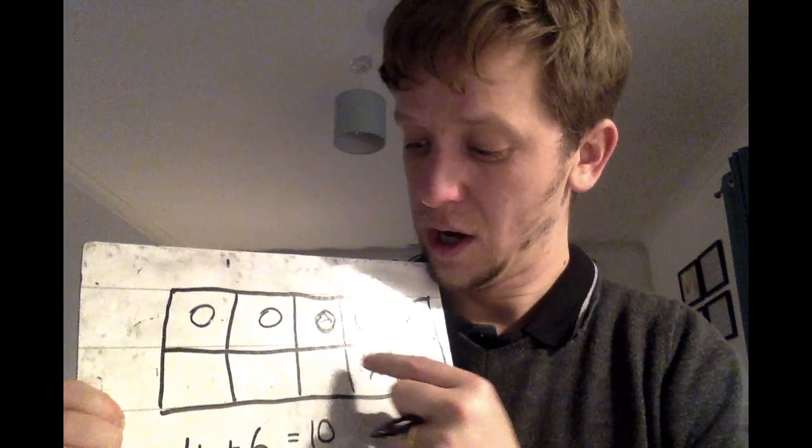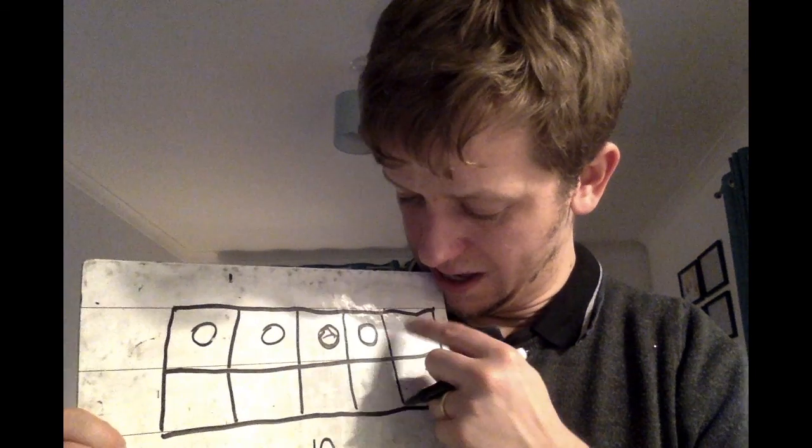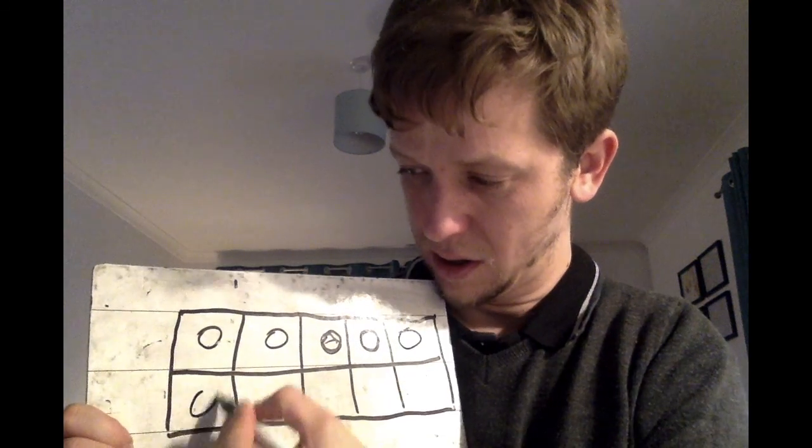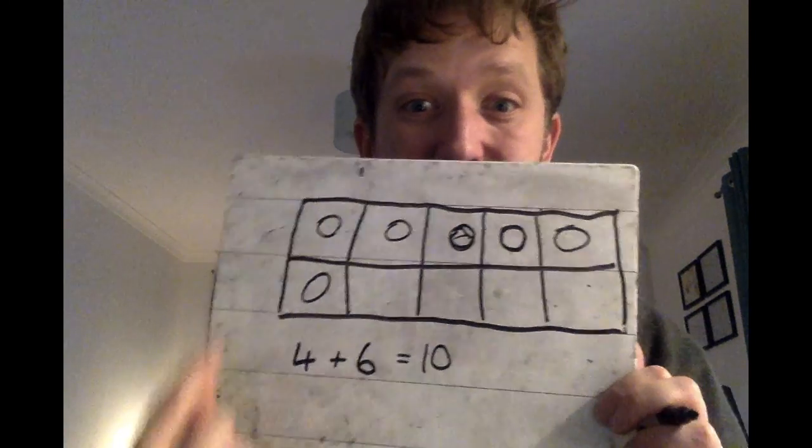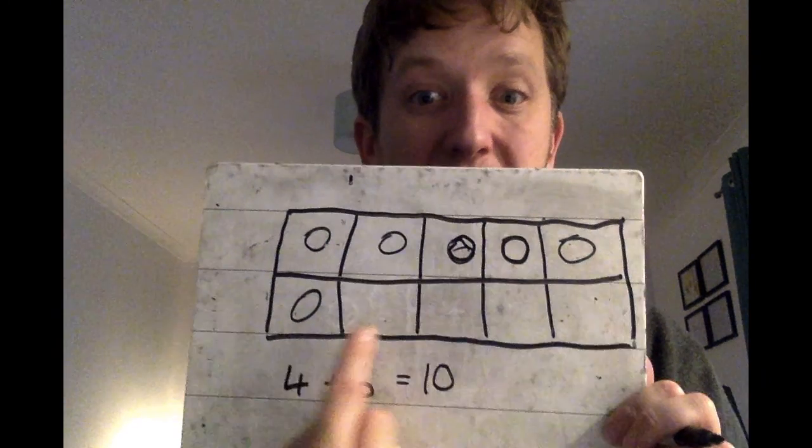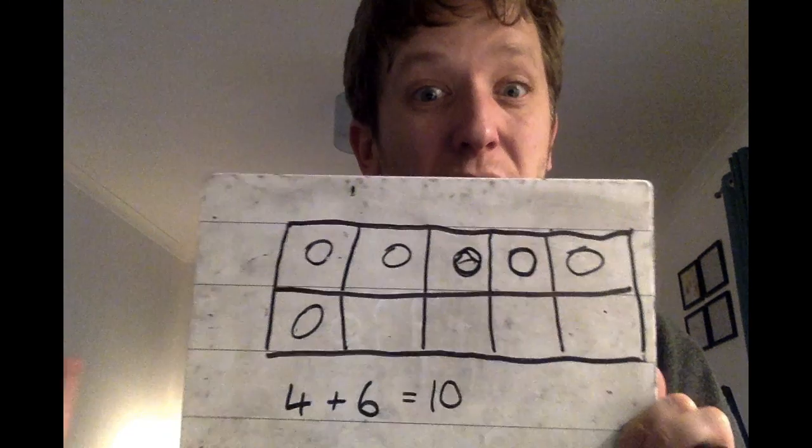You could challenge yourself to see how quickly you can read the numbers. Because if I see this number, I don't count each one individually. I look at it and I think, that top row is five and one more is six. So that must be six.